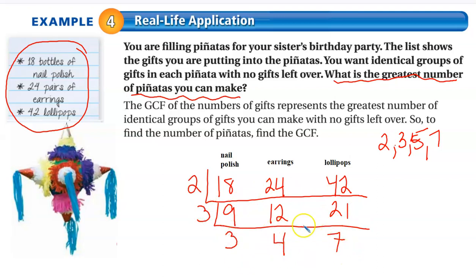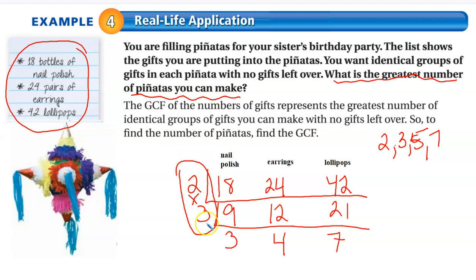And now I've got some uncommon factors. These are the common factors; these are the uncommon factors. When I multiply the two greatest common factors together, I get six. So the idea is in this problem, I'm really trying to find the greatest common factor — what's the biggest number of groups I can make where I have equal things?